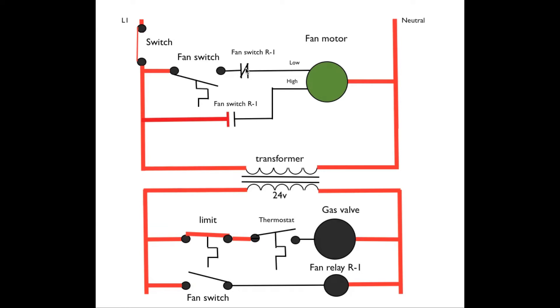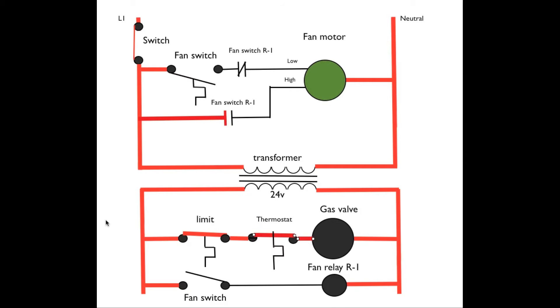So let's go ahead and sequence this thing. Let's do a sequence on a call for heat. Okay, what we've done is we close this thermostat. The limit's already closed. Power passes through the limit, through the closed thermostat, to energize the gas valve. That's going to start the gas furnace operating.